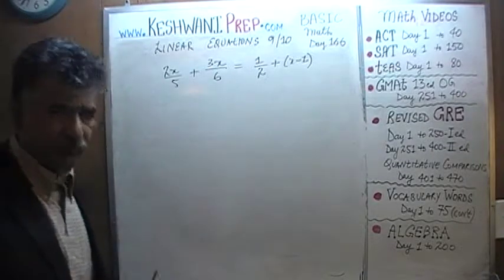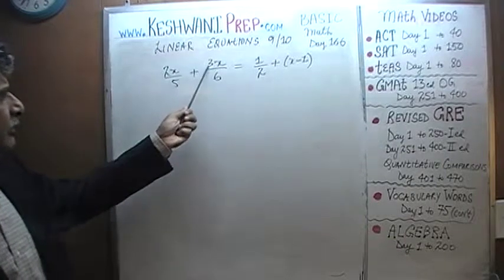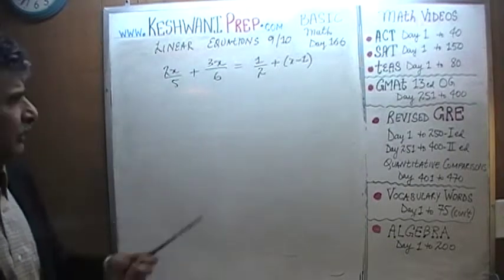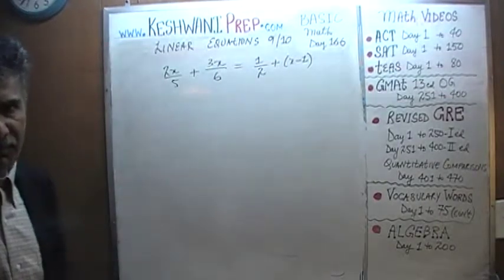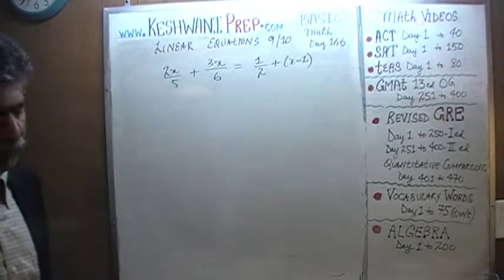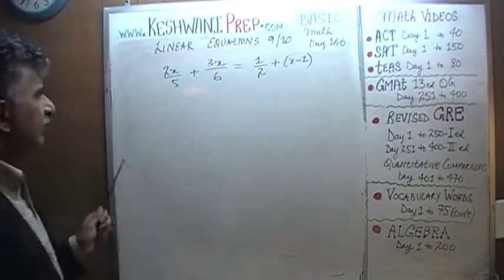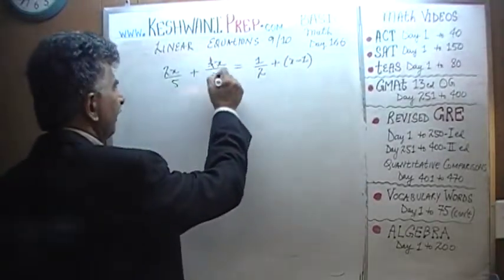First thing we should notice is that we have a 3 here on the top, we have a 6 at the bottom. If you were to drag this 3 and the 6 throughout the entire journey, it will be a hassle. We can reduce it. If you can reduce it, we will have to do less work. Just divide top and bottom by 3 right away. So 3 goes away and 6 becomes 2.